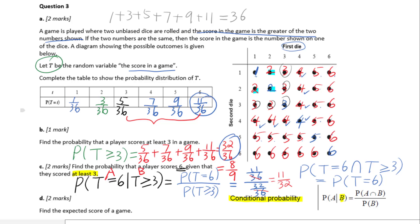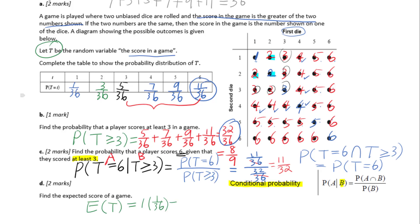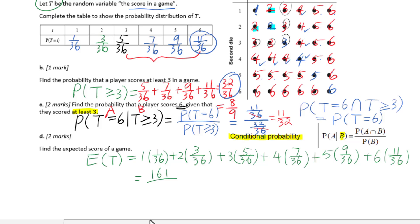For part D, find the expected score of the game. Using the expected value formula: E(T) = 1 × (1/36) + 2 × (3/36) + 3 × (5/36) + 4 × (7/36) + 5 × (9/36) + 6 × (11/36) = 161/36.